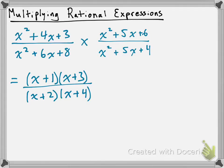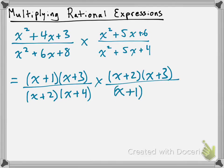You can double check these. So now I'm going to have my multiplication symbol. I'm going to factor the top of the second expression: x squared plus 5x plus 6 factors into x plus 2 times x plus 3. And that's going to be over x plus 1 times x plus 4.